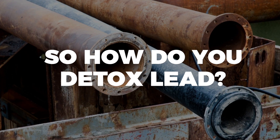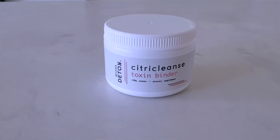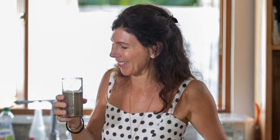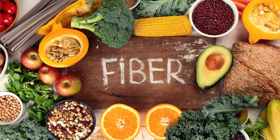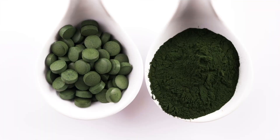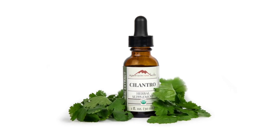So how do we detox lead? You want to take a binder, like citrus pectin found in a product I developed called Citra Cleanse, which is a great way to absorb lead like a sponge from your digestive system. You can also eat more fiber in your diet to bind onto lead. You can take chelators like DMSA to chelate lead, or take things like chlorella. Cilantro extract is also very effective — not eating cilantro leaves, as that's not strong enough.